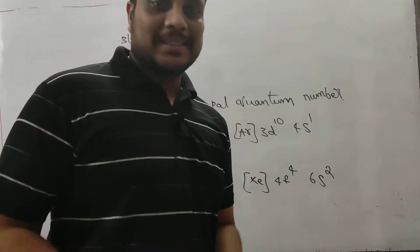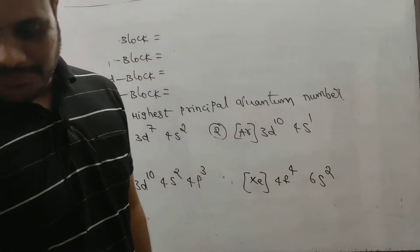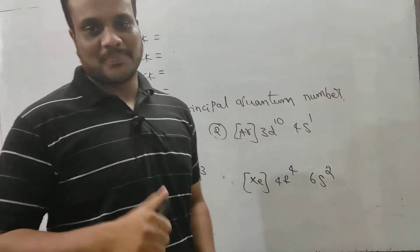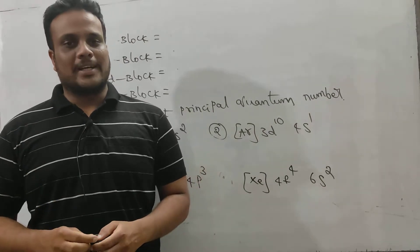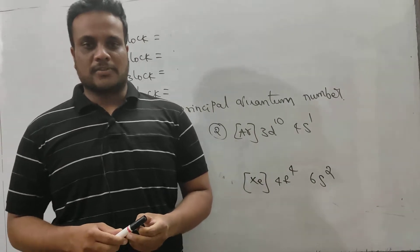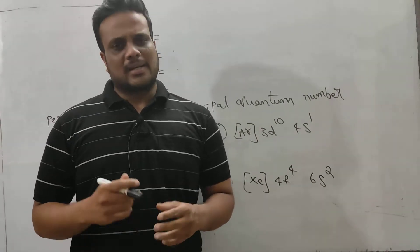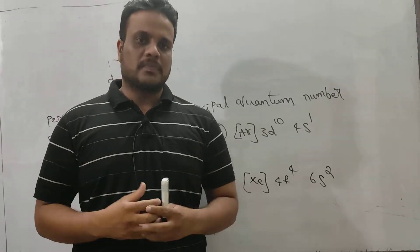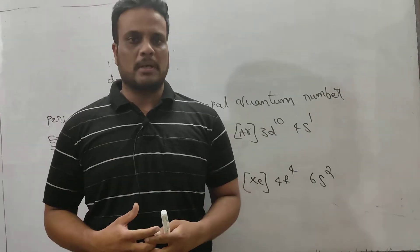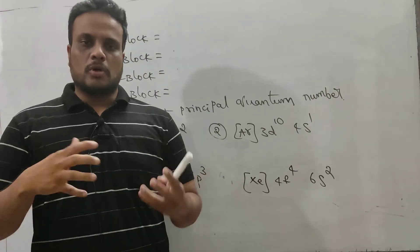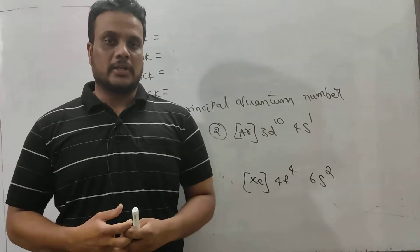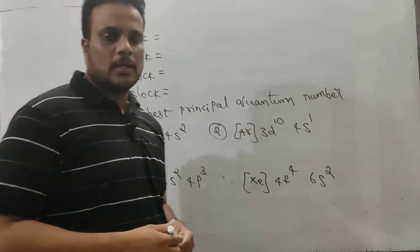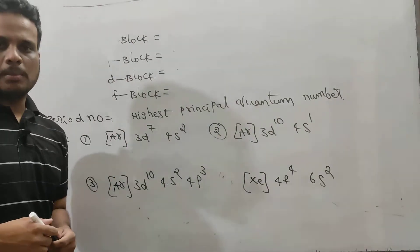Hello, my dear students. Today I am going to make a video on group number and period number. Generally, this is also an important model question from classification of elements. There are two model questions. In one model, you will be given atomic number, then you have to find out group number or period number. In another model question, you will be given some electronic configuration, then from the given electronic configuration, we have to find group and period number. So let's talk about both the cases.